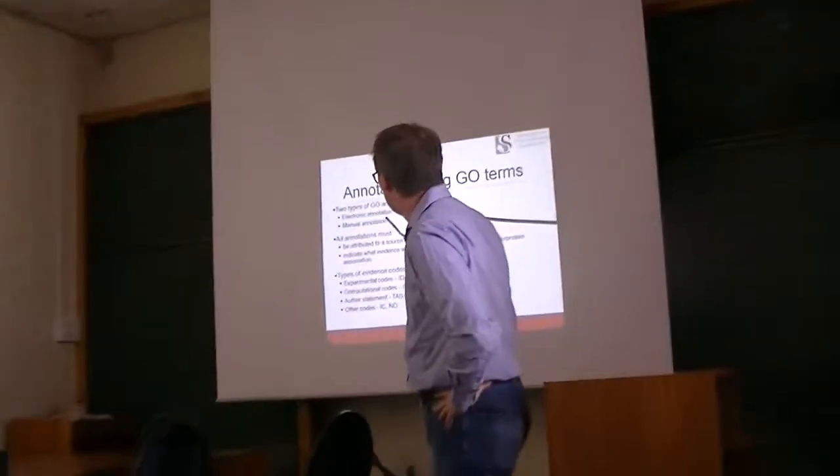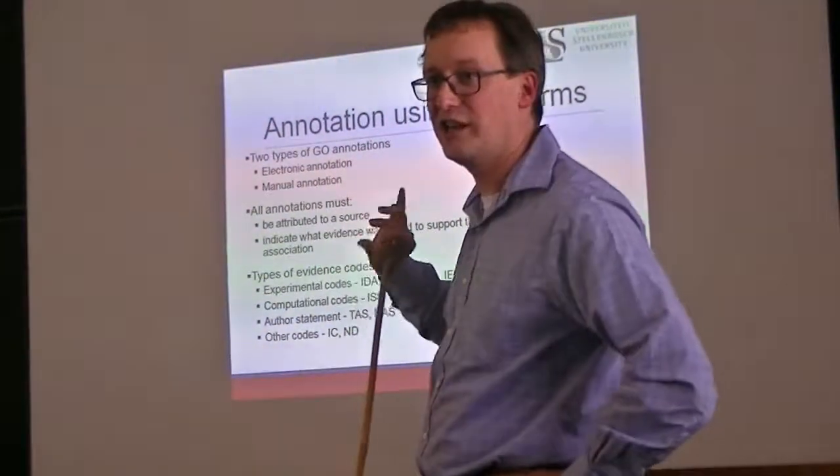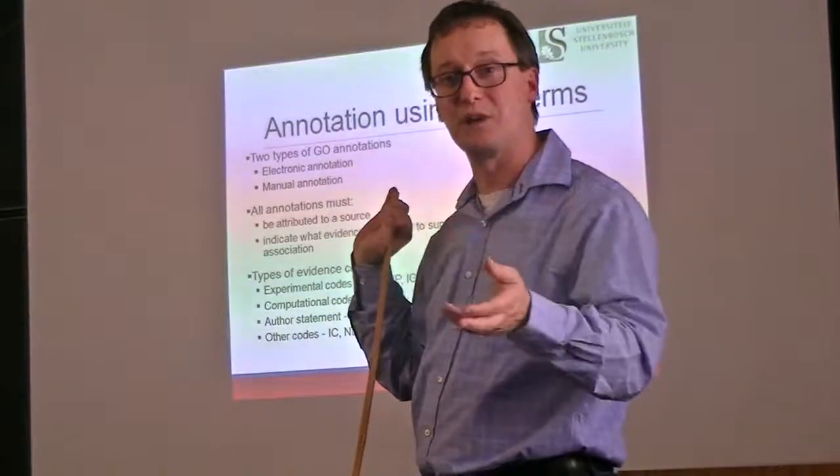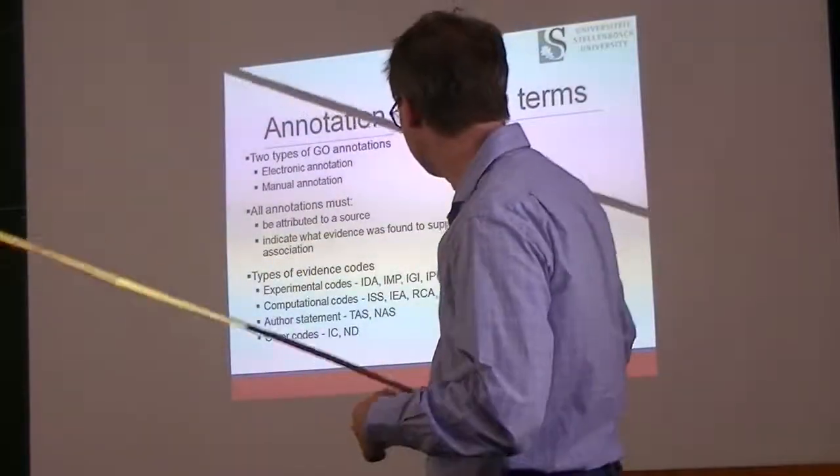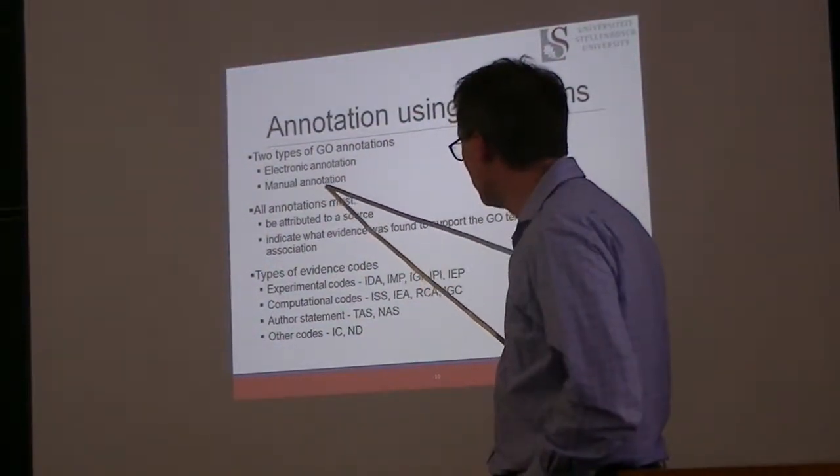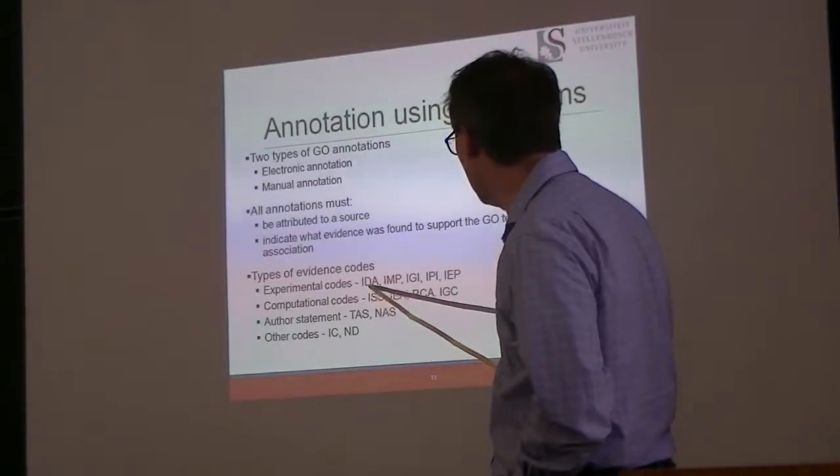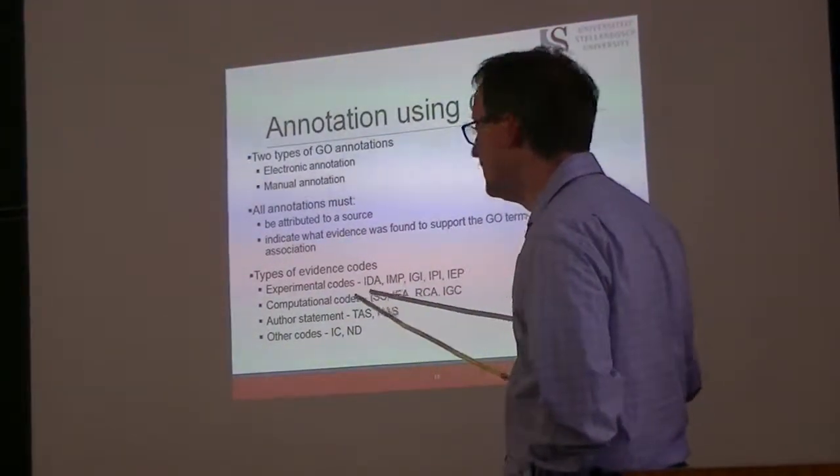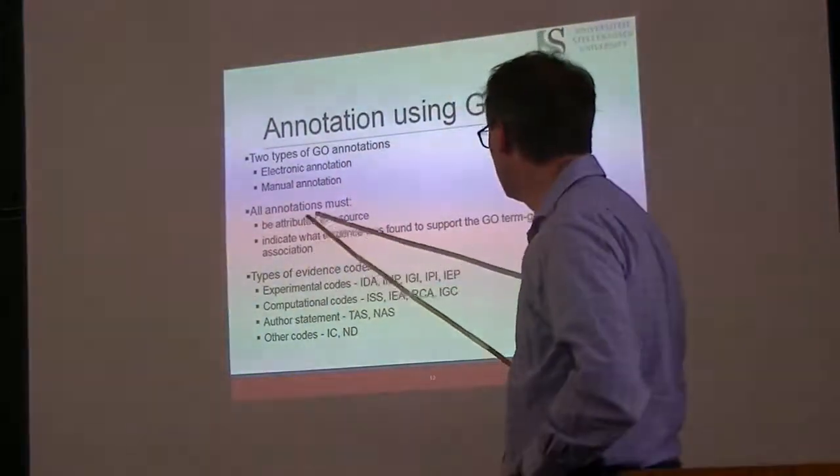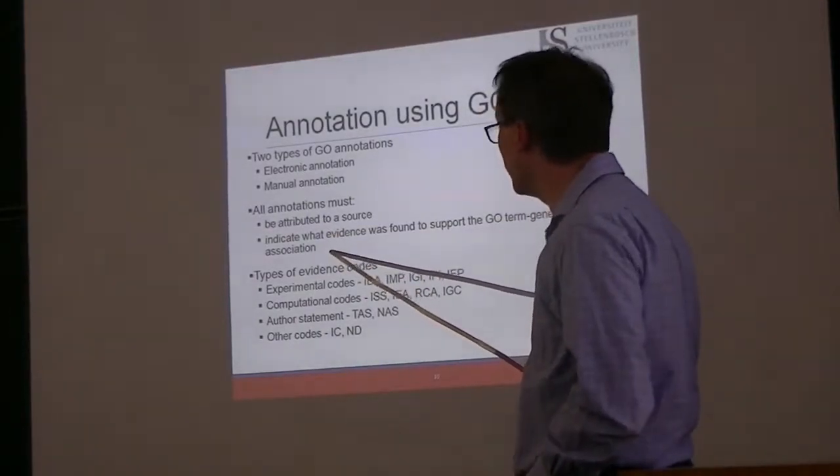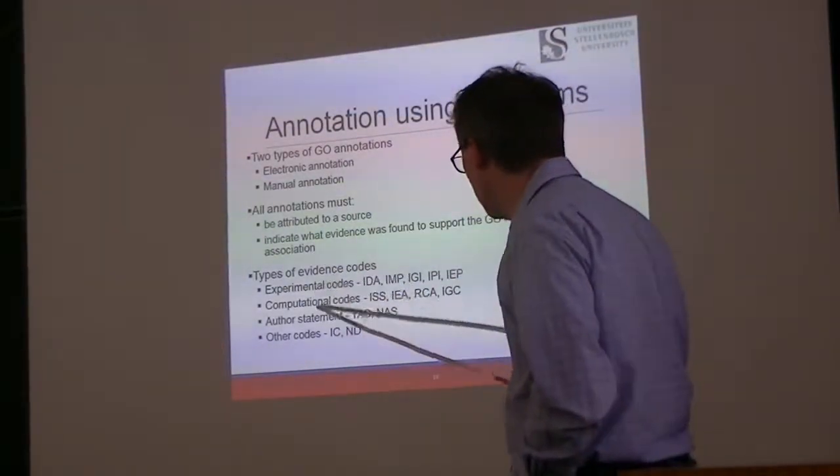We have at least two different kinds of GO annotations: electronic and manual. We saw something very like this in UniProt. The proteins in SwissProt have gone through manual annotation. The proteins in TrEMBL have only had automated interpretation. All of them, however, must be attributed to a source. You might have an IDA or IMP or IGI. All of these indicate what type of evidence was used to make this claim about the annotations.